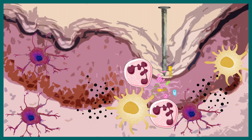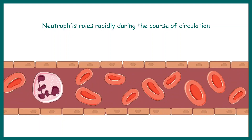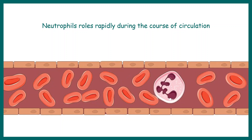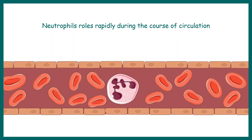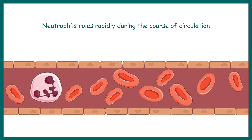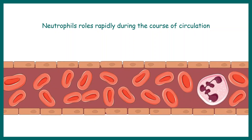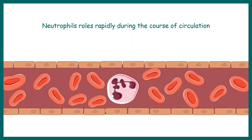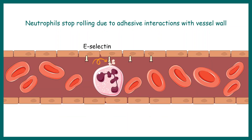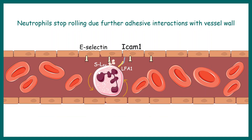Secretion of several cytokines, especially inflammatory cytokines, allows different changes in the body. One of these changes is expression of surface adhesion molecules in the blood vessels. Generally in the blood vessel, neutrophils circulate in a rolling fashion. When there is adhesive expression in the endothelial wall, neutrophils slow down, and there are several interactions between the neutrophil and the capillary wall.